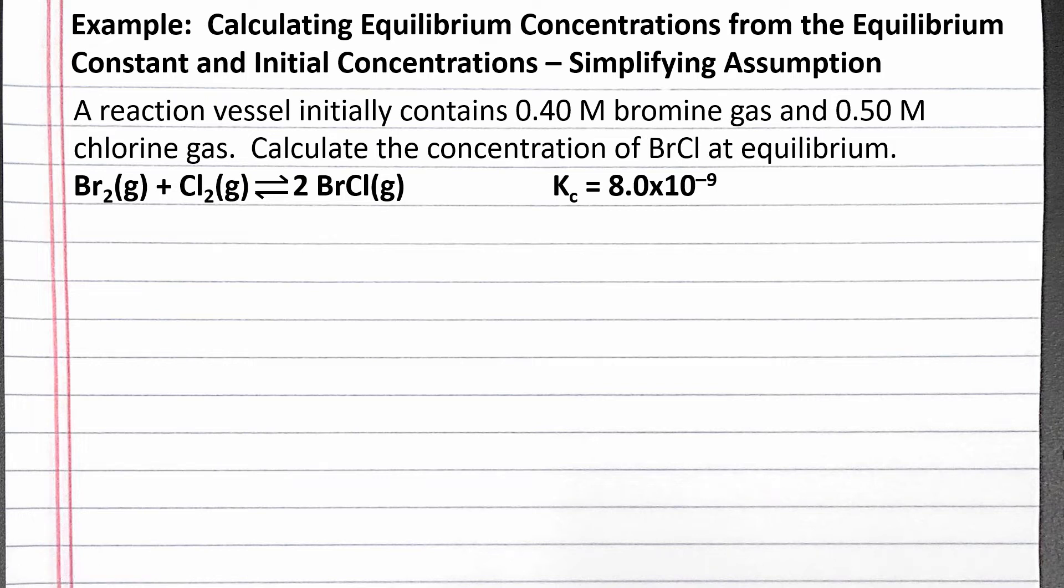In this example, we calculate equilibrium concentrations from the equilibrium constant and initial concentrations, solving for x using two simplifying assumptions.